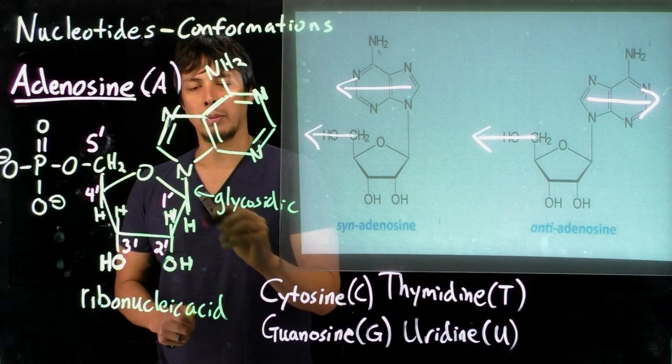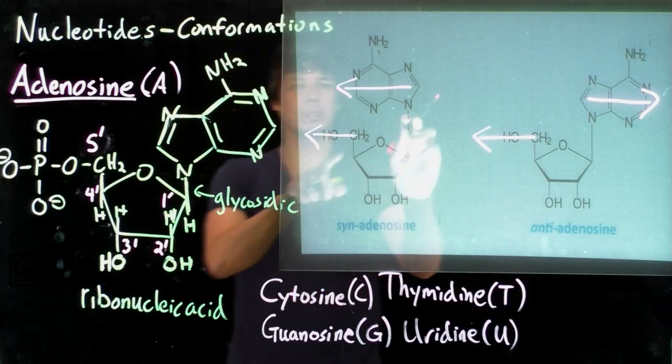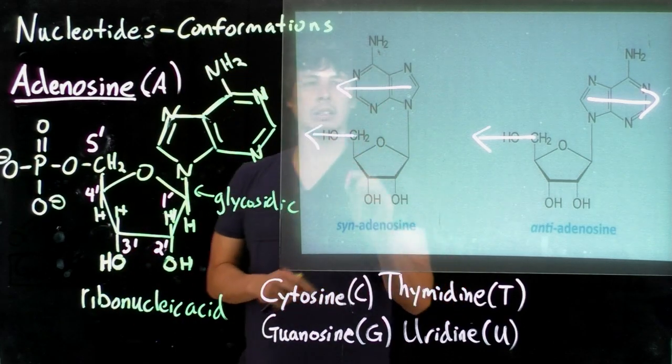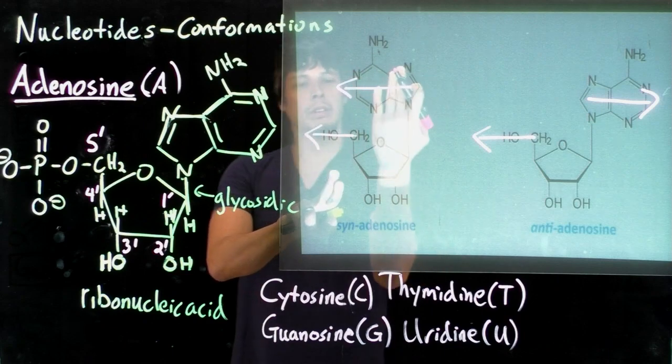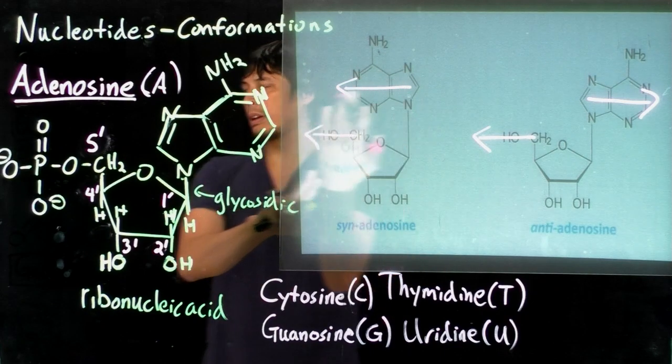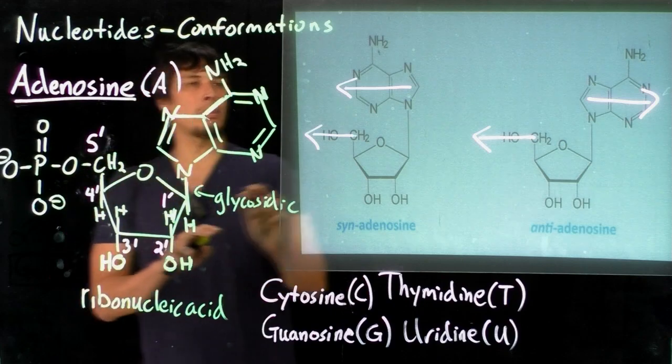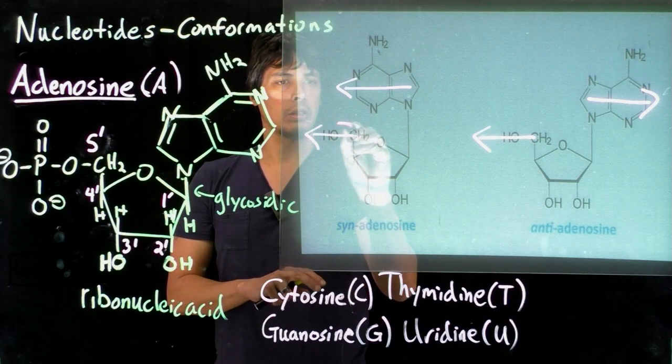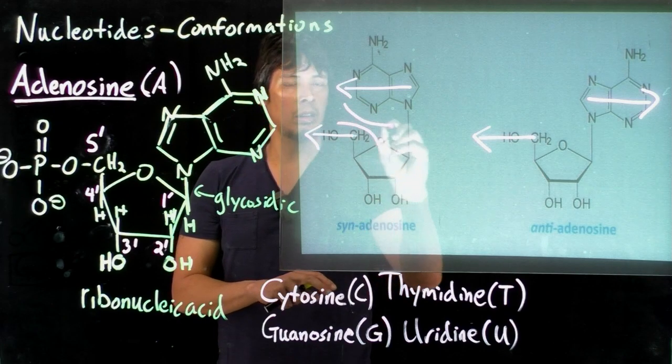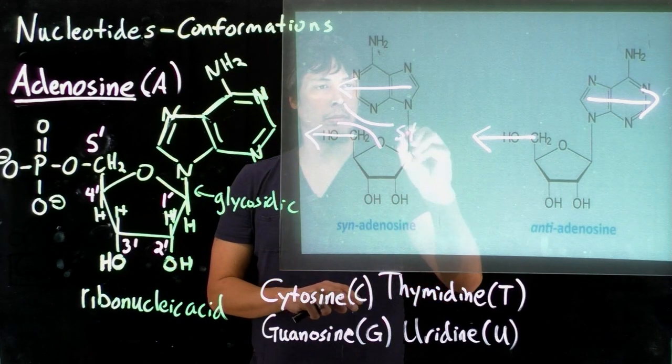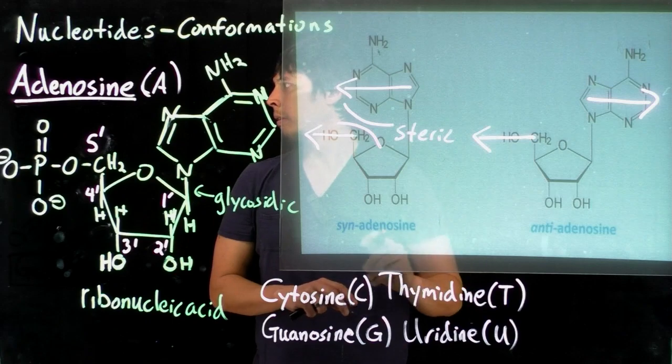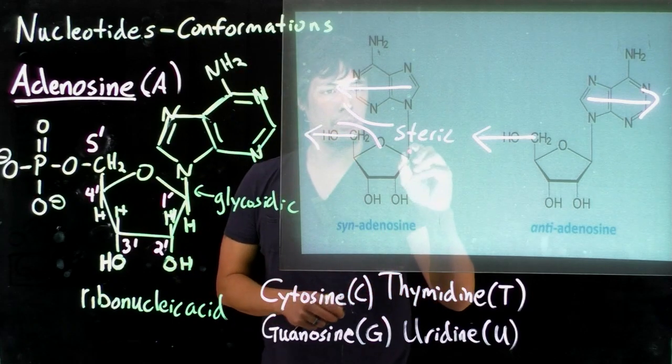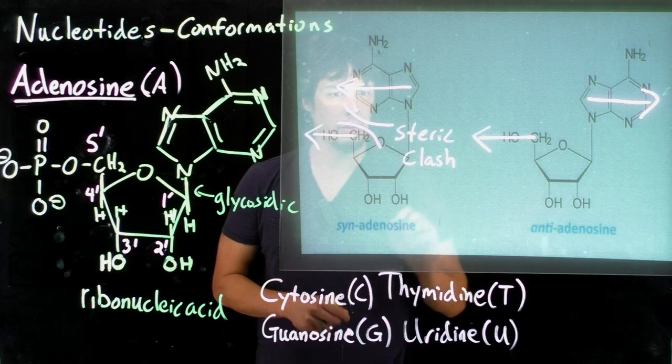If you think about what anomer this is, this is a beta anomer, so these are on the same side. So this causes a problem, because if the nitrogenous base rotates back towards the five prime carbon, what can happen is that this can run into each other. And so that's going to cause a steric clash.